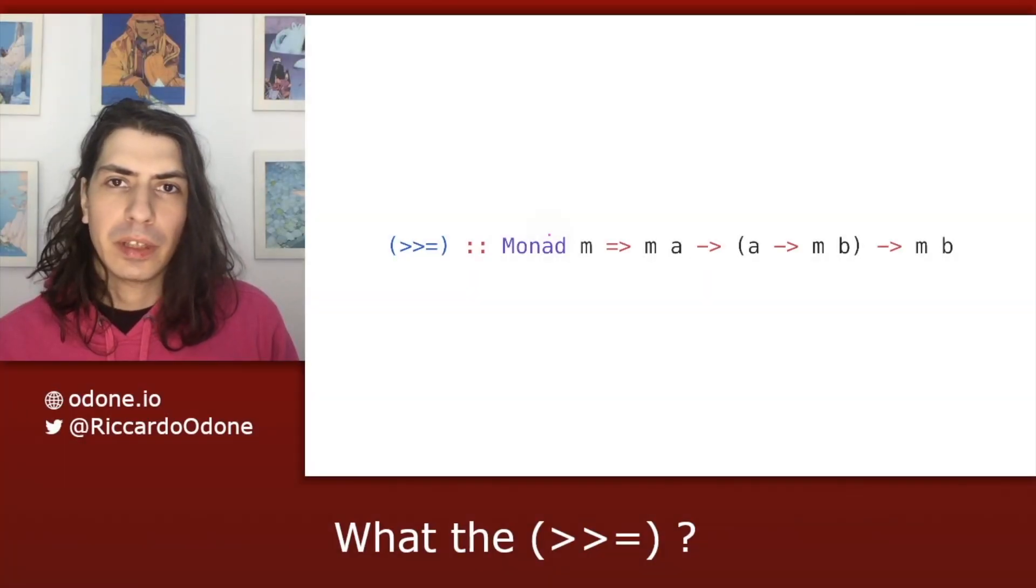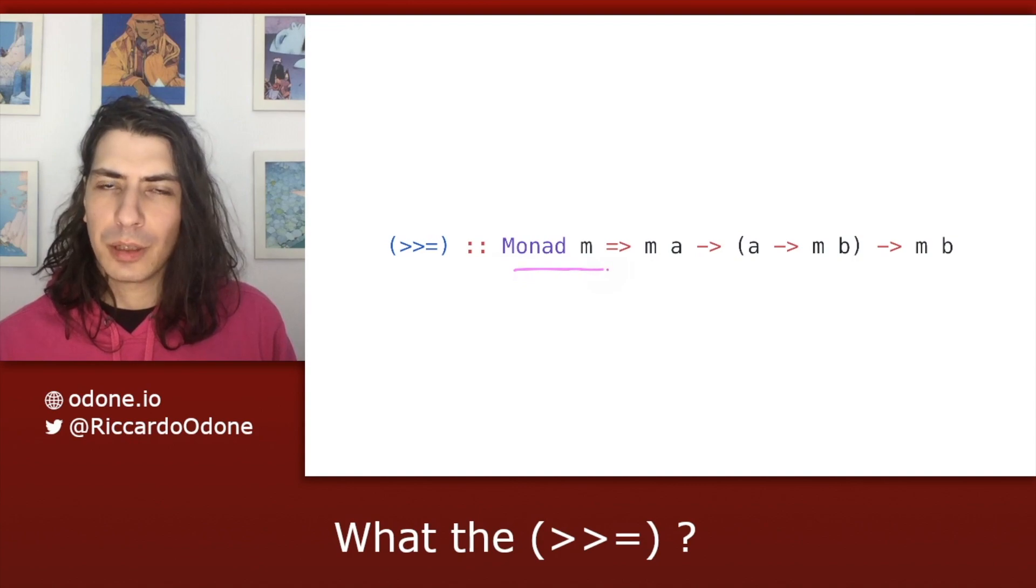Here we have the type signature for bind. As you can see, this time we have a context which is a monad, and not a functor anymore as in the previous videos.